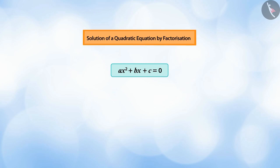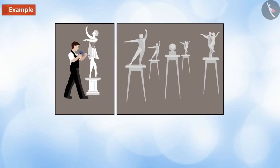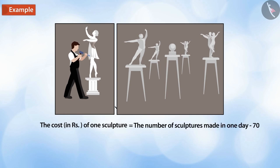Do you know how to solve a quadratic equation by using factors? A sculptor makes some sculptures in a day. The cost in rupees of one sculpture is equal to the number of sculptures made in one day minus 70. On a particular day, the sculptures cost 1800 rupees. Find the number of sculptures made that day.